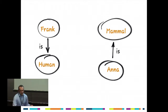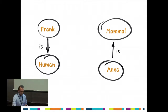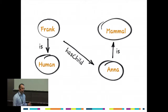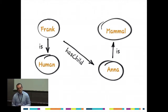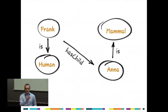Say Frank is human, and human has some properties. Anna is mammal. We would know that human is a mammal, so Frank is also a mammal, but the computer doesn't know that. We also don't know the connection between Frank and Anna. Then we add: Frank has a child that is Anna. This is stored in triples — subject, predicate, object — so Frank, has a child, Anna. And Anna is mammal. But still nothing tells the computer that Frank is a mammal.